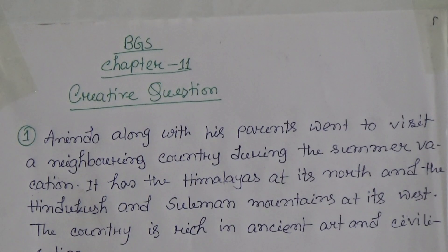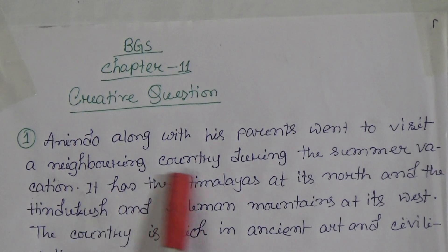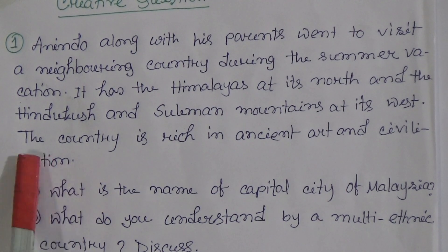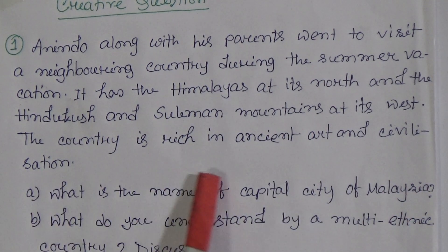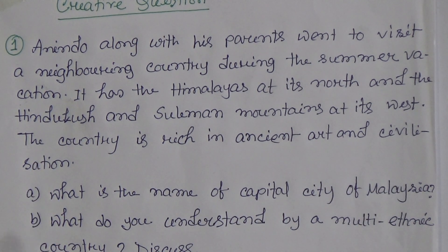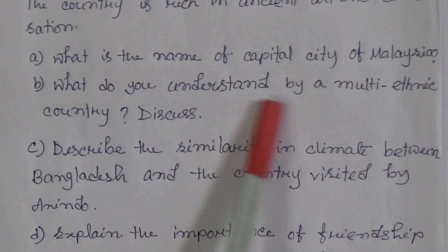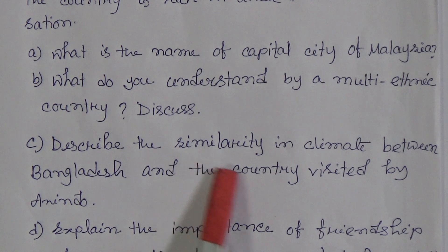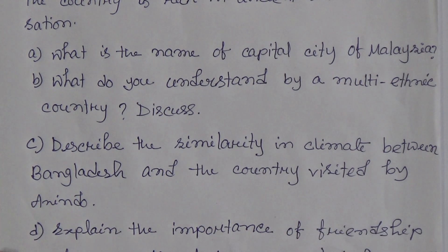The first creative question: Onindo's parents went to visit a neighboring country during the summer vacation. It has the Himalayas at its north and the Hindu Kush and Suleman mountains at its west. The country is rich in ancient art and civilization. Question a: What is the name of the capital city? Question b: What do you understand by a multi-ethnic country? Question c: Describe the similarity in climate between Bangladesh and the country visited by Onindo.